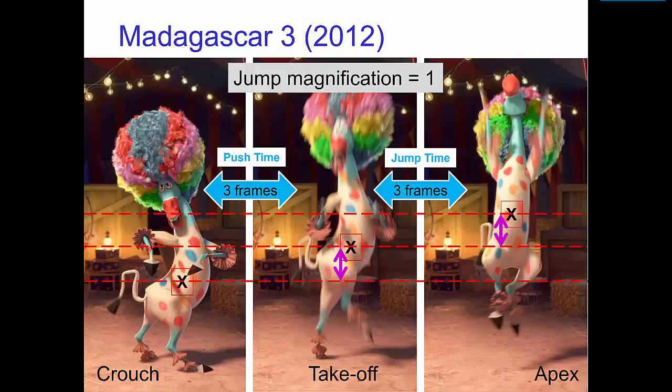That means that the push time, number of frames from crouch to takeoff, equals the jump time, number of frames from takeoff to apex.